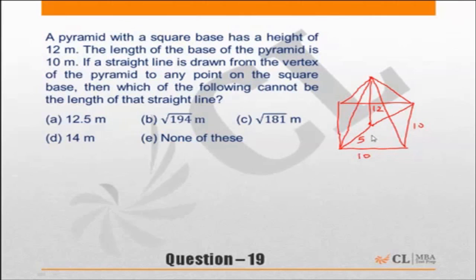So half of 10 root 2 will be 5 root 2. If a straight line is drawn from the vertex of the pyramid to any point on the square base, then which of the following cannot be the length of that straight line? So we need the range of distances from the vertex to any point on the square base.